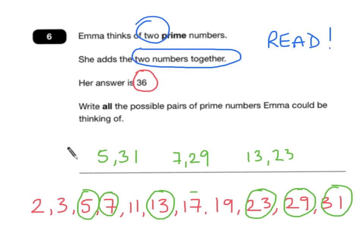And then finally you'll find that 17 and 19 are your final pair. And you would get 2 marks for that. You'd only get 1 mark if you missed one of them out. Well done.